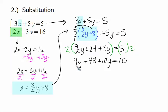Combine our like terms. 9y plus 10y is 19y. Subtract the 48 from both sides, and then we divide by 2, and we've got our value of y.